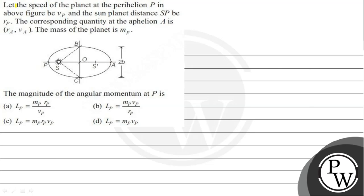Hello, let's see this question. The question says let the speed of the planet at perihelion P in the above figure be vp, and the sun-planet distance SP be rp. The corresponding quantity at aphelion A, and the mass of the planet is mp.